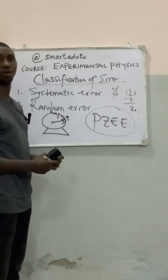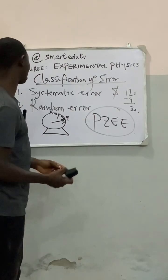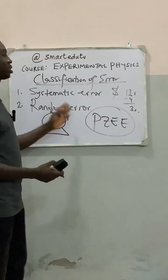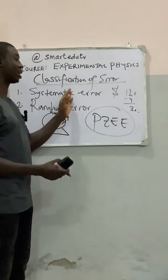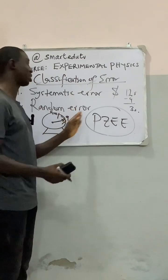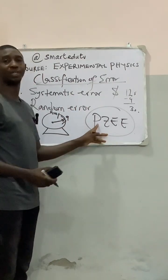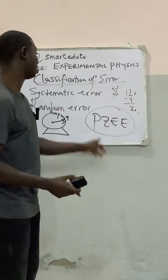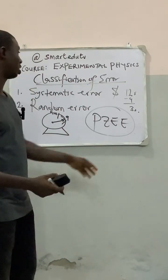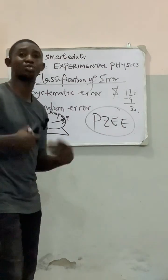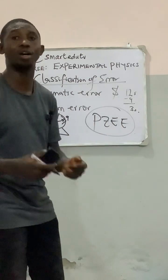That is all about zero error. So these are the sources of systematic error. Don't forget, the sources of systematic error are combined as PZEE. Where P is the personal error, the Z is the zero error, the first E is the error due to wrong assumption, and the last E is the error due to instrument.